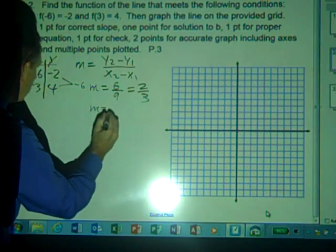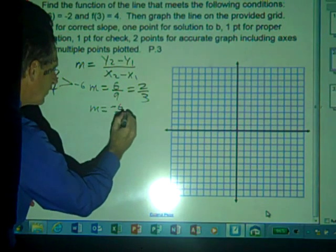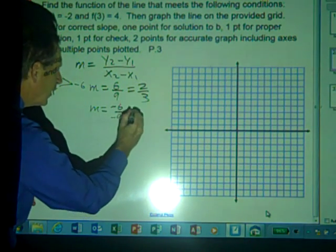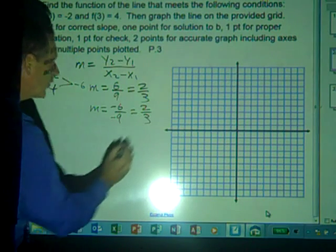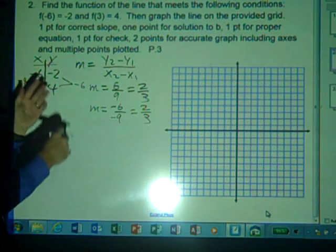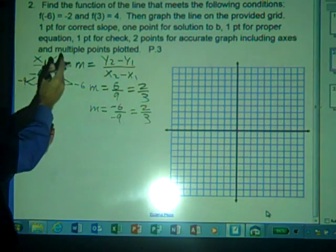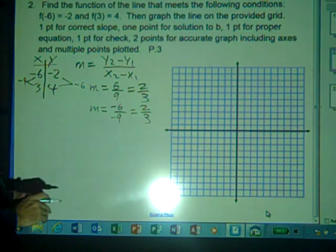If we take m equals right over left, negative 6 over negative 9, we would likewise get 2 thirds. So it really doesn't matter which way we subtract, as long as we do the same way for the change in y and the change in x.